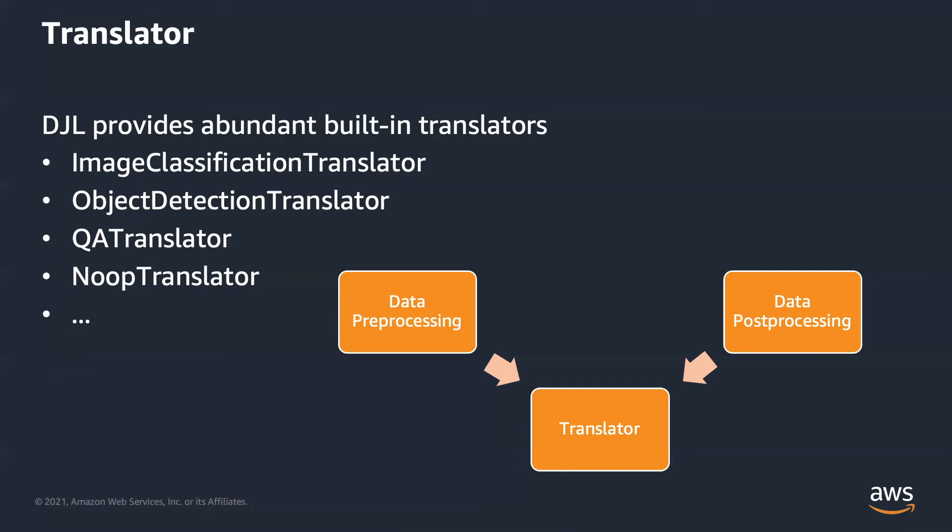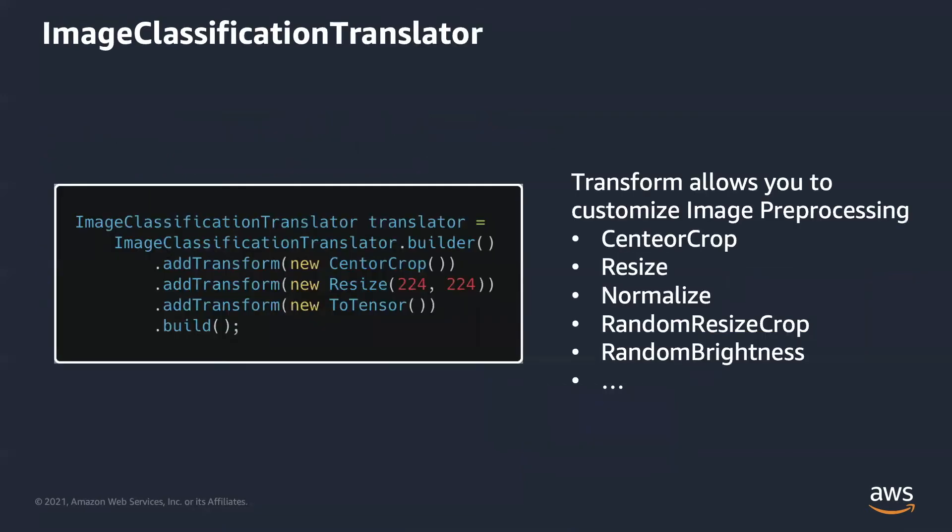These high-level translators provide necessary functionalities and abilities of customization for your own model. Take the image classification translator for instance — there is an add transform method in the builder to add common image transformations including center crop, resize, and normalize. You can also implement your own translator. We will have another video for this topic.